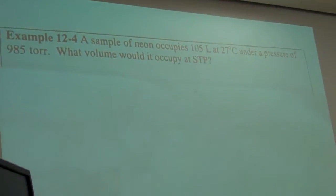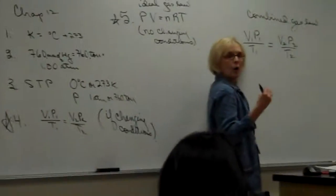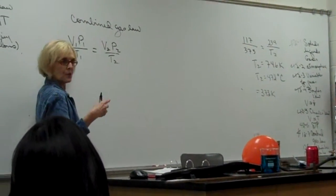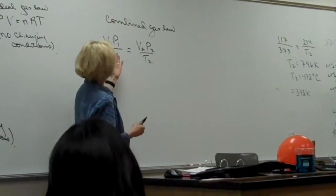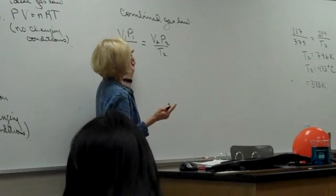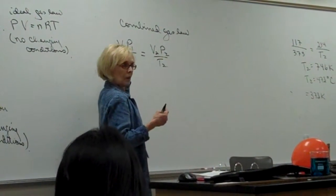Before we attack this thing, you're going to need to know it, and at first it looks pretty imposing as far as how you're going to remember it, but let's analyze it. It's very symmetrical. VP over T, VP over T. All the 1s are here on the left, all the 2s are over here.